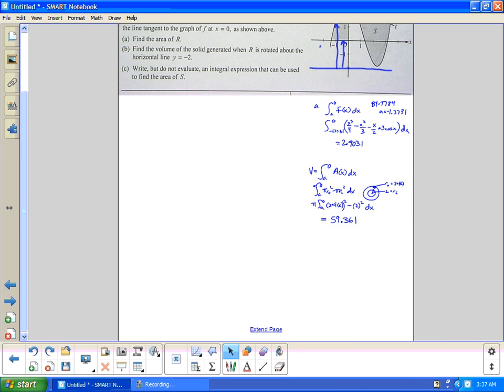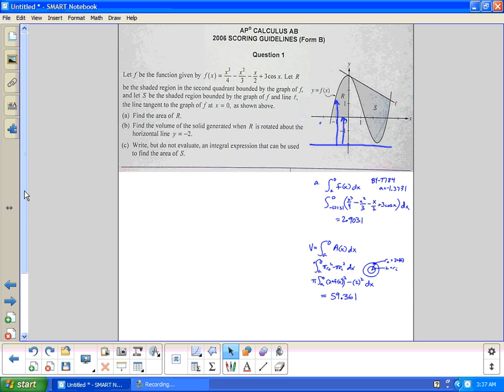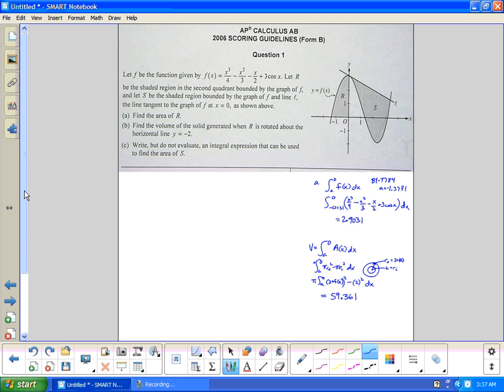Alright, so now I've got A, B. So now letter C. Write but do not evaluate, write but do not evaluate an integral expression that can be used to find the area S. Well if I'm going to find S, the area, I'm going to need to know the equation of line L. And we know L is tangent so I'm going to find f prime of x first and letter C I'm going to start there and get 3x squared over 4